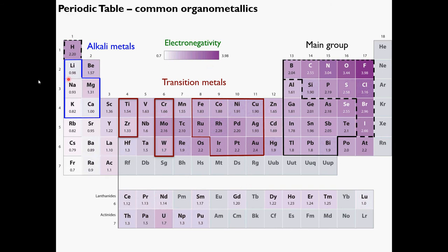We concerned ourselves with lithium and magnesium organometallics in the previous material. Now we're going to focus primarily on this area of the periodic table. In CHEM 344, you'll be doing some palladium chemistry — a Suzuki-Miyaura reaction using a palladium source — and then a copper-mediated aerobic oxidation of an alcohol to give the corresponding aldehyde.